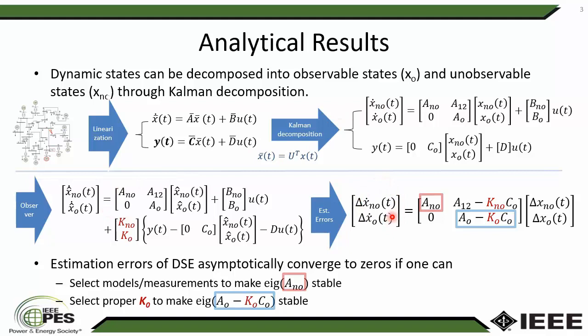Notice that for the observable states, the eigenvalue can be controlled by the observer gain Ko. In contrast, for the unobservable states, the eigenvalue cannot be controlled. This suggests that if the unobservable subsystem matrix A has an unstable eigenvalue, the corresponding estimation error will grow and cause the state estimation to diverge. For the observable states, we can always adjust Ko so that the eigenvalue is stable, yielding converged state estimation results.